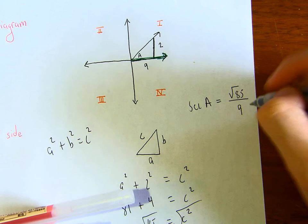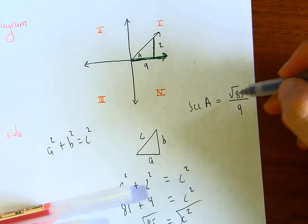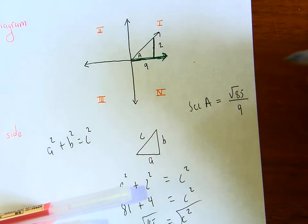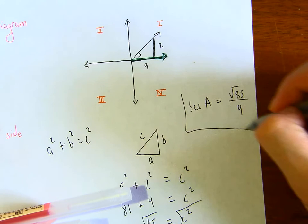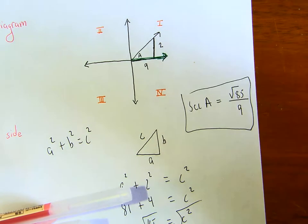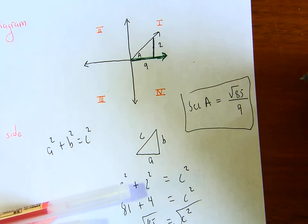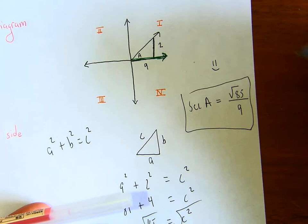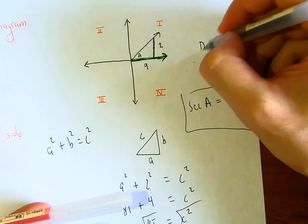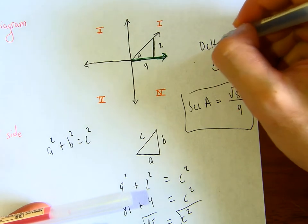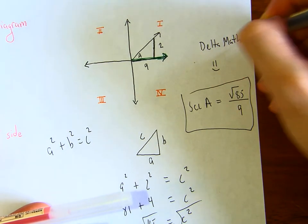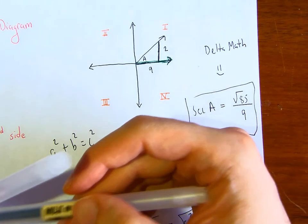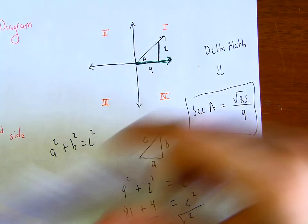So c equals square root of 85. Now secant of a is square root of 85 over 9. Notice the radical is not in the denominator, so this is fine. Secant of a equals square root of 85 over 9. I hope this helped — go try some of the Delta Math questions on your own, and we'll go over any of these questions in class. All right, see you!